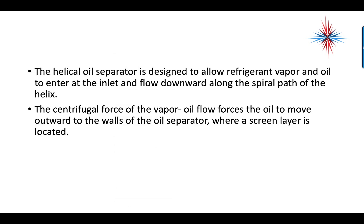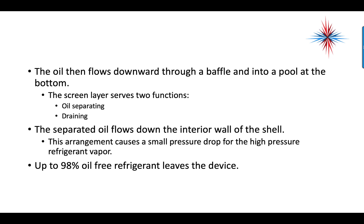The helical oil separator is designed to allow refrigerant vapor and oil to enter at the inlet and flow downward along a spiral path of the helix. The centrifugal force of the vapor-oil flow forces the oil to move outward to the wall of the oil separator where a screen layer is located. The oil then flows downward through a baffle into a pool at the bottom. The screen layer helps separate the oil as it goes around the helix and allows draining as oil molecules and droplets drain down the screen. Helical oil separators allow 98% oil-free refrigerant to leave the device.